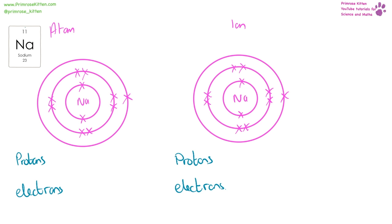Here we have sodium. It has an atomic number of 11, which means it's going to have 11 protons in the nucleus, and protons have a positive charge. In the atom it also has 11 electrons, which have a negative charge. The positive charges and the negative charges cancel each other out, so the overall charge on the atom is going to be zero.